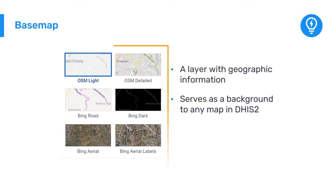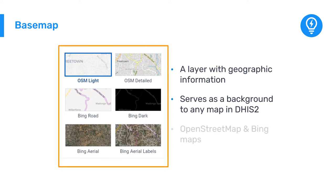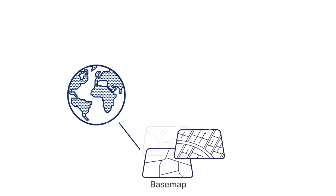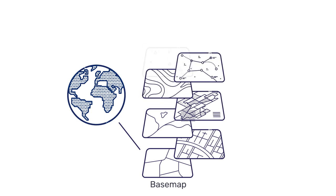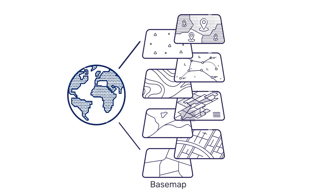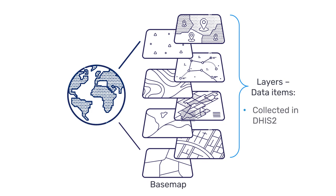There are several options of base maps from OpenStreetMap and Microsoft Bing Maps. Other layers can be added on top of the base map, where each layer represents a data item. These data items can be data specifically collected in the DHIS-2 instance or pulled from external sources.